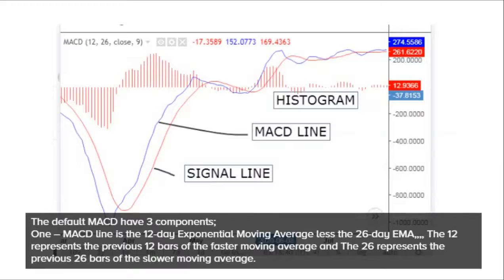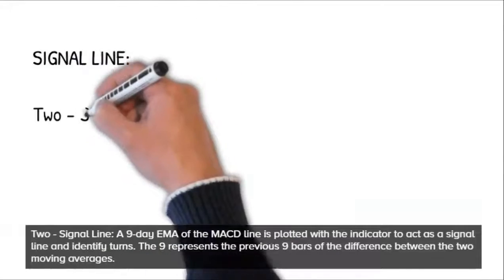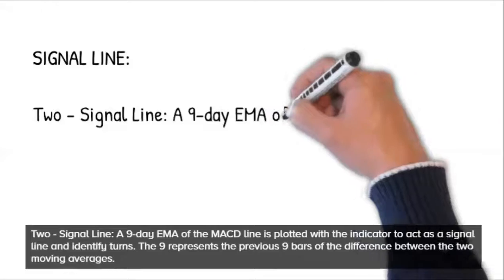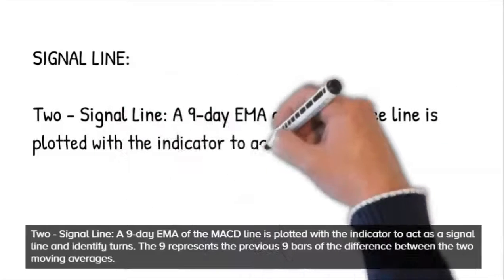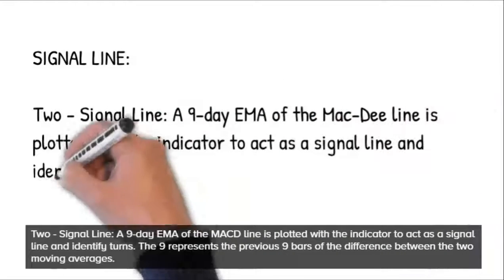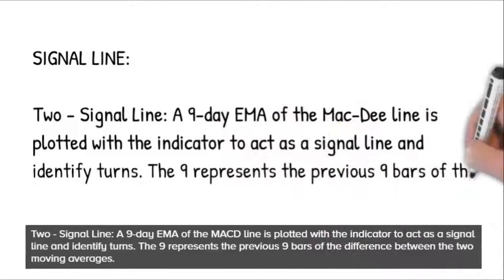Second, the signal line. A 9-day EMA of the MACD line is plotted with the indicator to act as a signal line and identify turns. The 9 represents the previous 9 bars of the difference between the two moving averages.